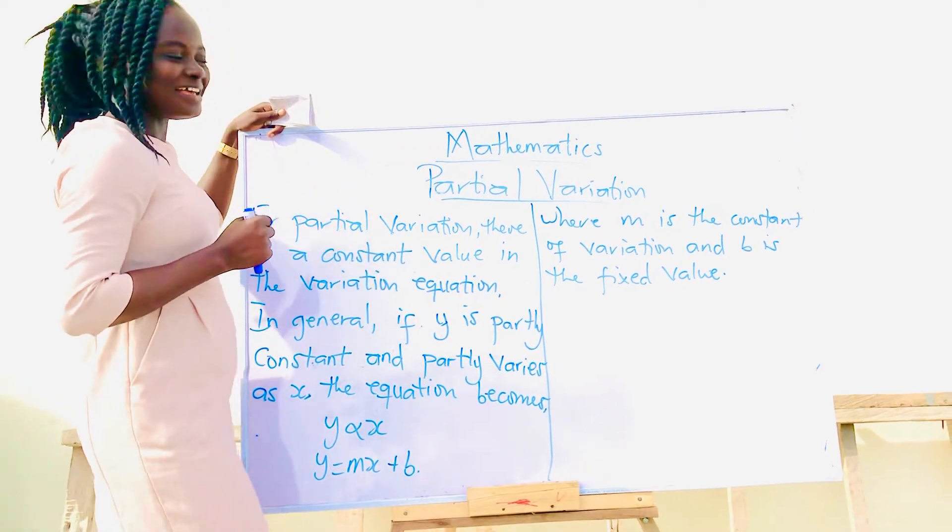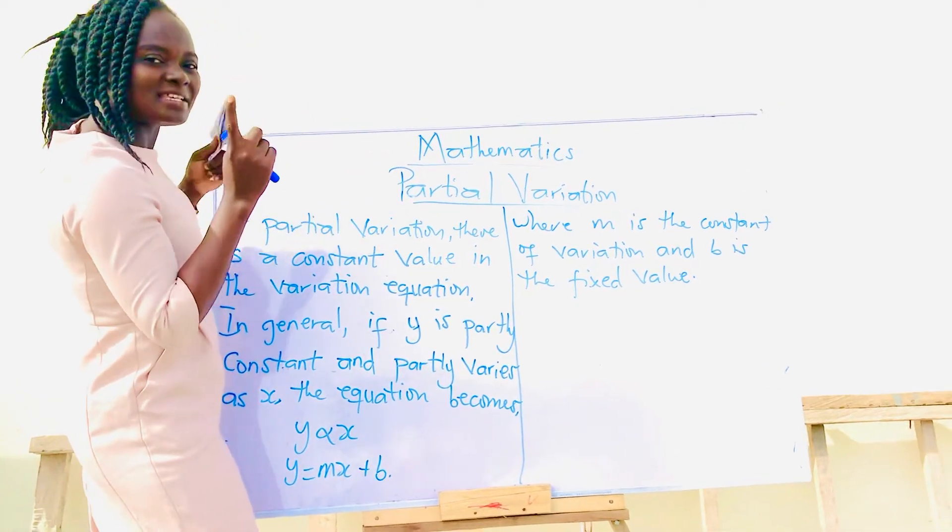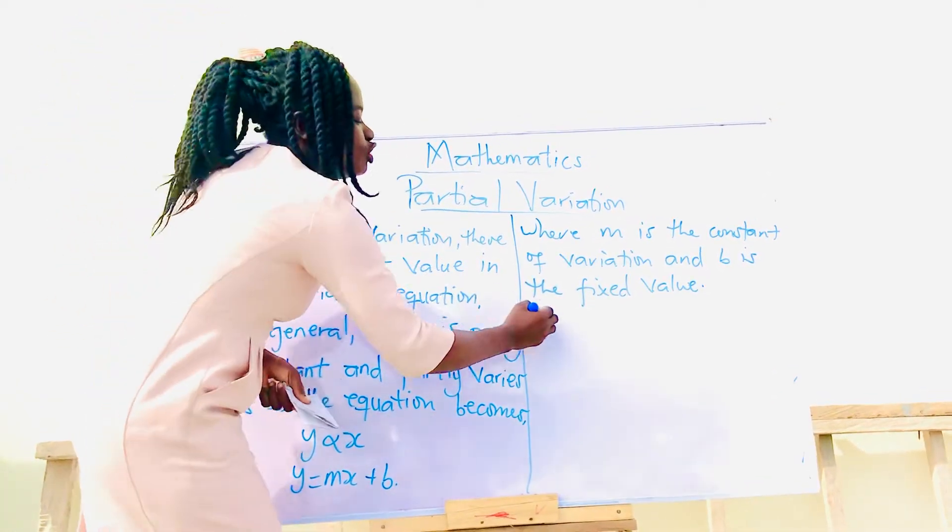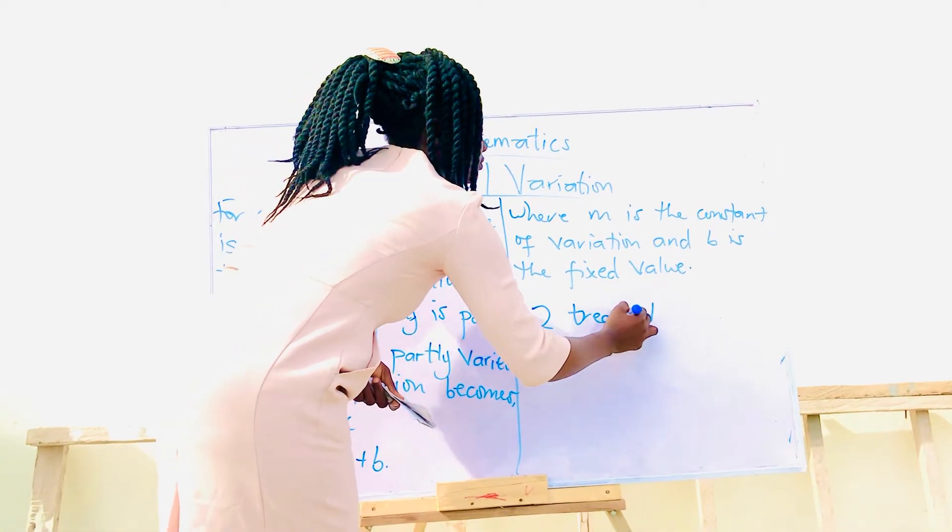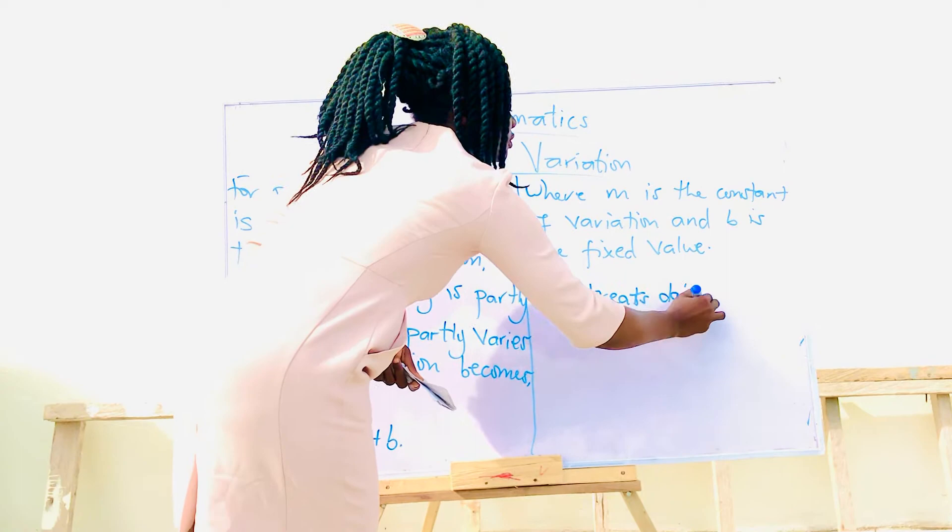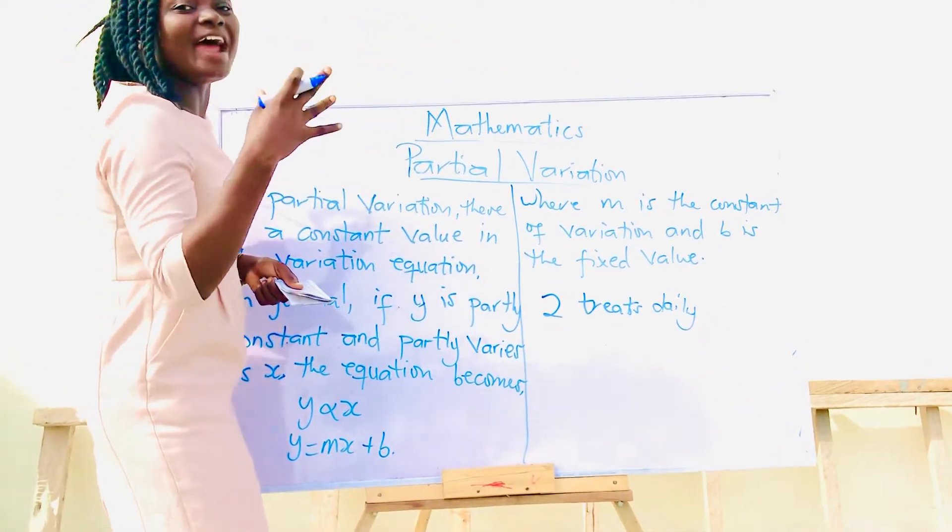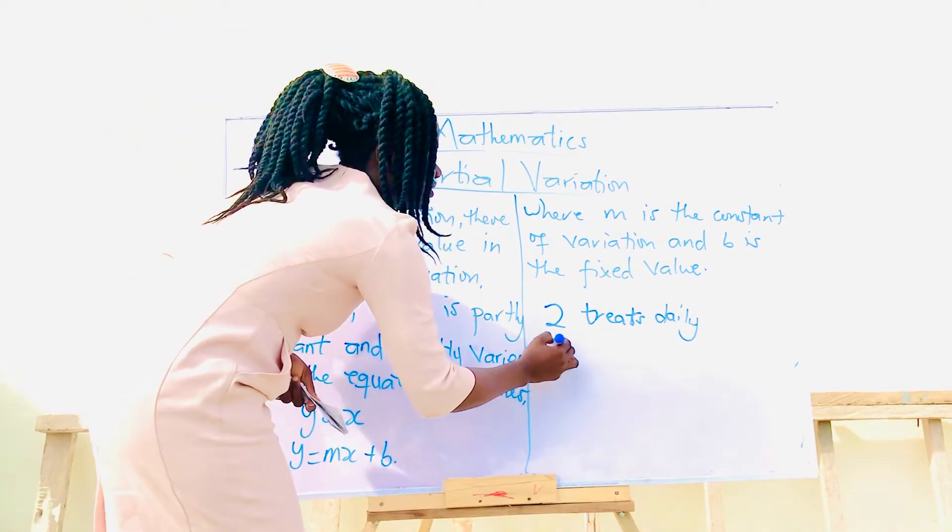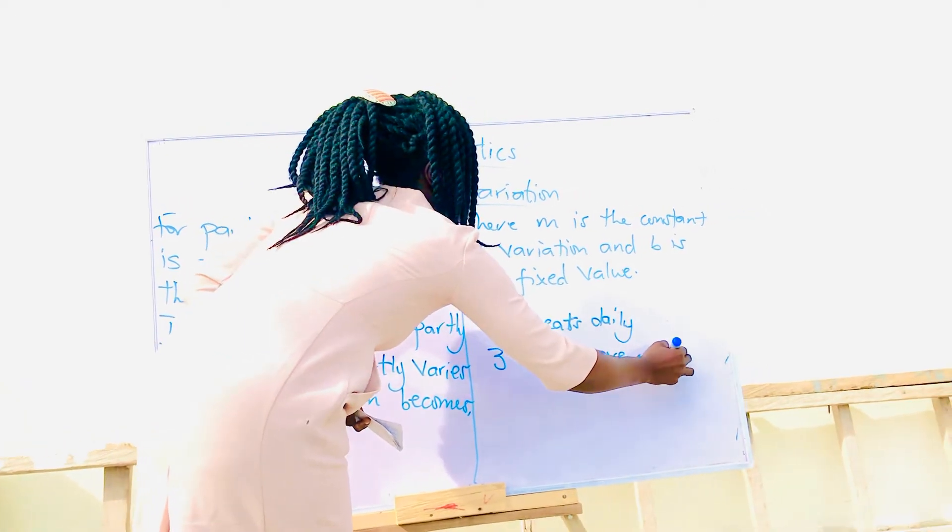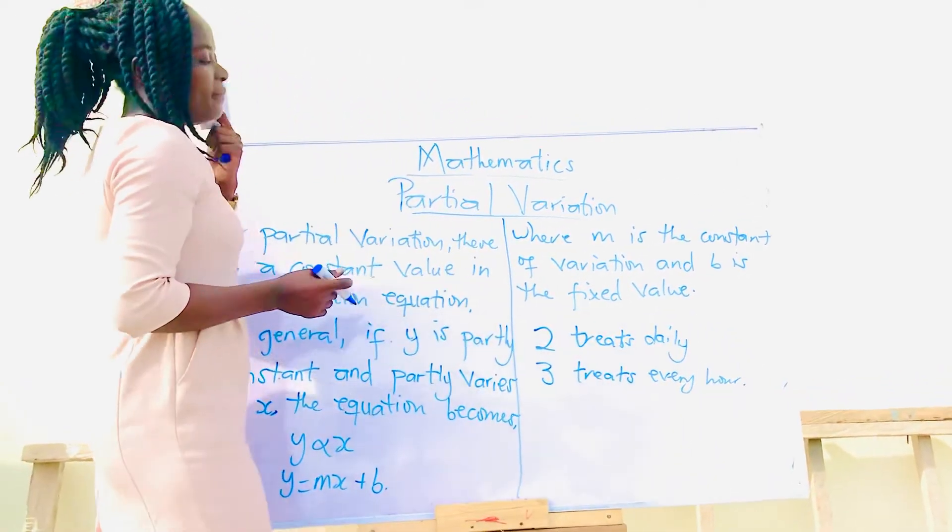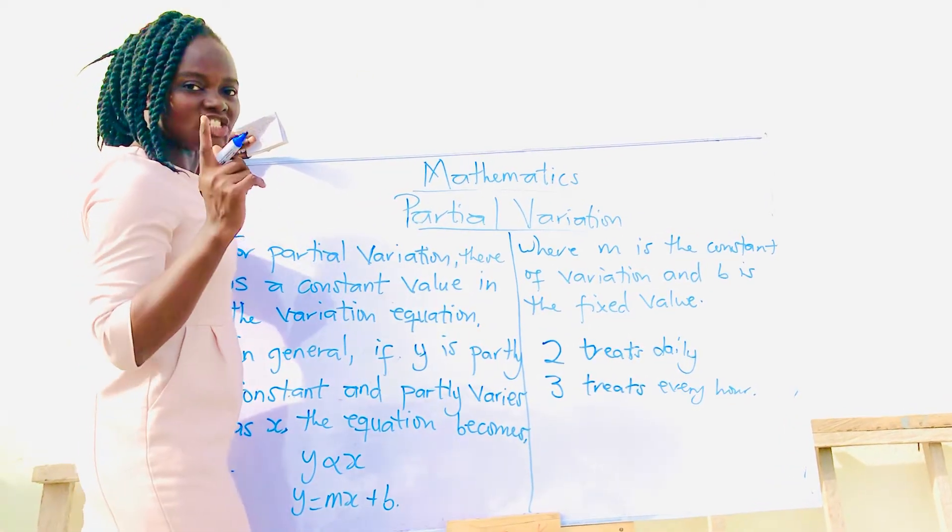The dog is called Pigs, and the babysitter gives Pigs two treats daily and adds three treats per every hour. In this form, we write a general equation, which is y equals mx plus b.